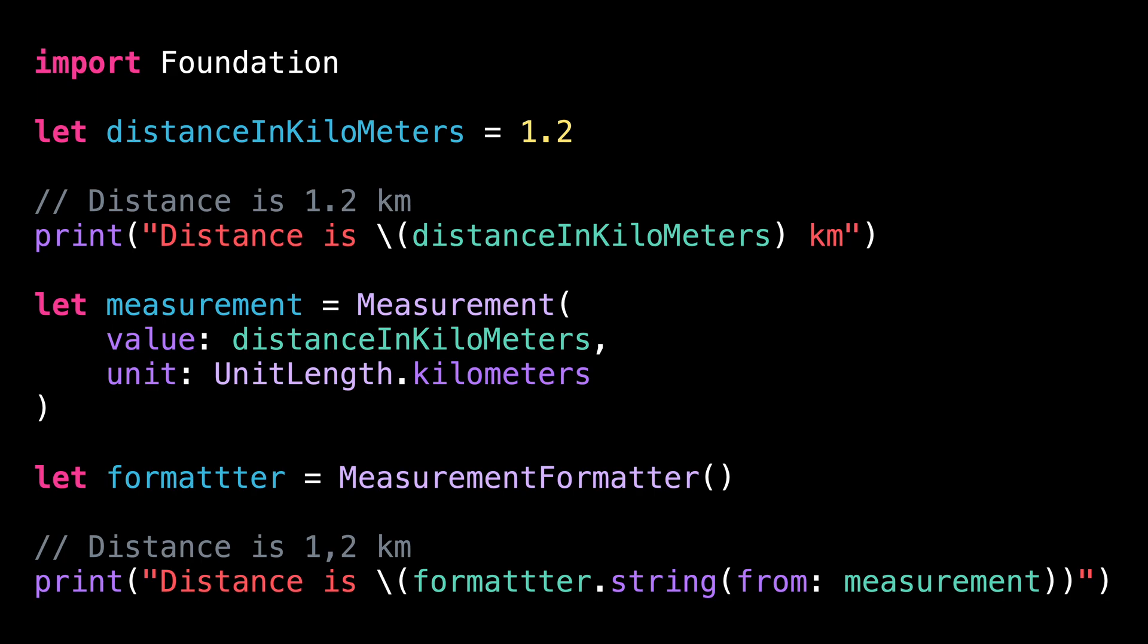Right now, my locale is set to French, so the distance is still displayed in kilometers. You can notice, however, that the decimal separator has changed from a point to a comma because that's how a French user expects a distance to be formatted.